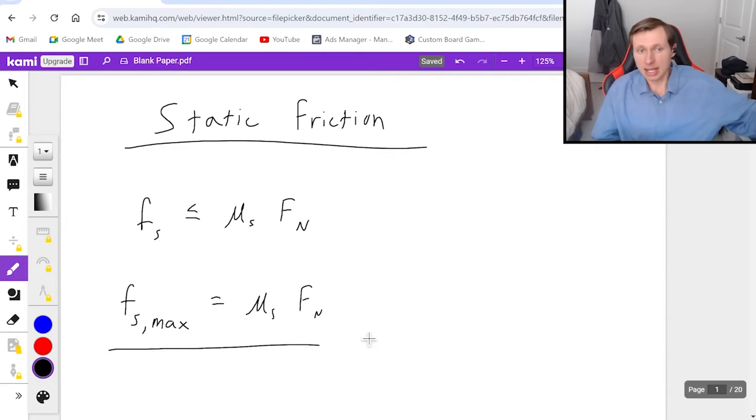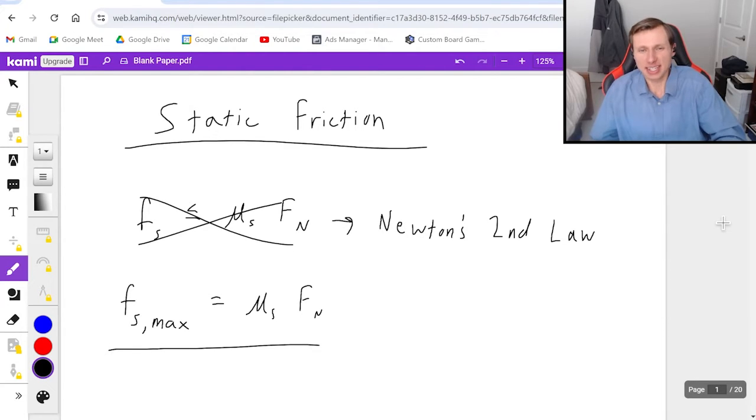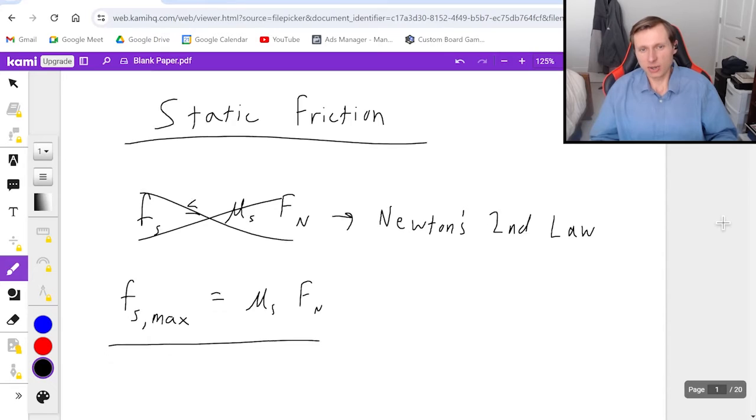And if it's not the max and you need to use the top one, first of all, you can't use the top equation. It's not really an equation. What you have to do in the top circumstance when you're not talking about the maximum is you just need to use Newton's second law. It's the exact same thing we did to find the normal force. We use Newton's second law and we solve it that way. And we're going to look at an example of that today. So let's go ahead and get started.